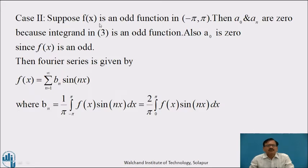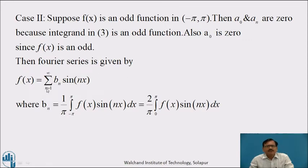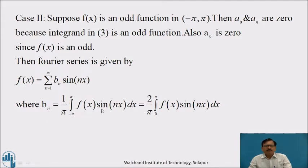Case 2: Suppose f(x) is an odd function in (−π, π). Then a₀ and aₙ are both 0, since the integrand in equation (3) is an odd function and f(x) itself is odd. The Fourier series reduces to f(x) = Σ(n=1 to ∞) bₙ sin nx, where bₙ = (1/π) ∫₋π^π f(x) sin nx dx = (2/π) ∫₀^π f(x) sin nx dx.